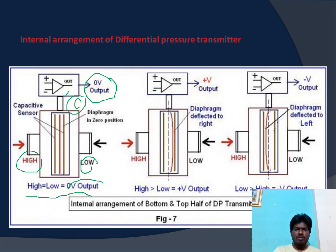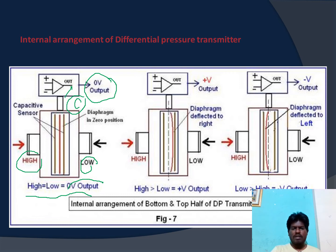This capacitance output goes through a signal conditioning circuit, which contains an operational amplifier. In the first condition, since the high pressure terminal and the low pressure terminal both have the same value, we get zero output voltage.